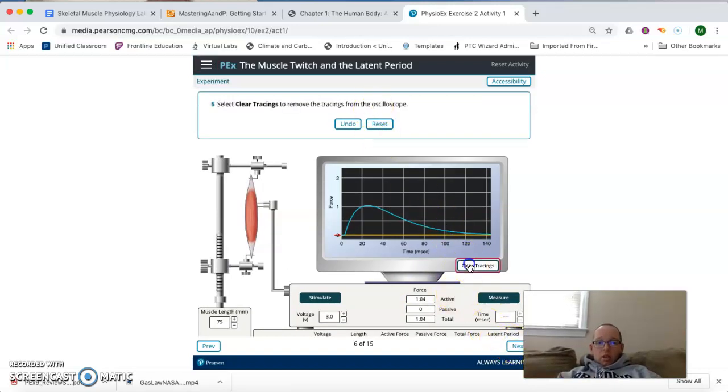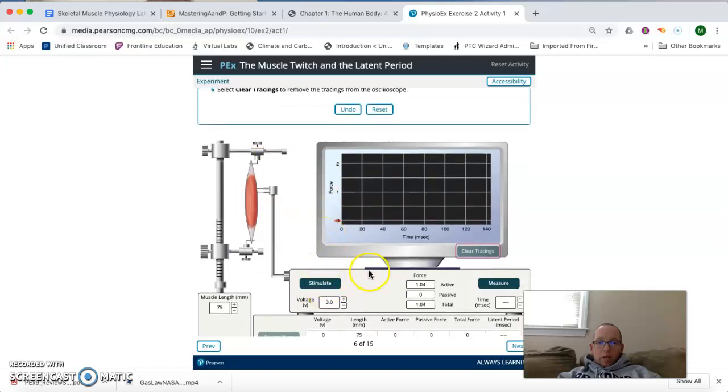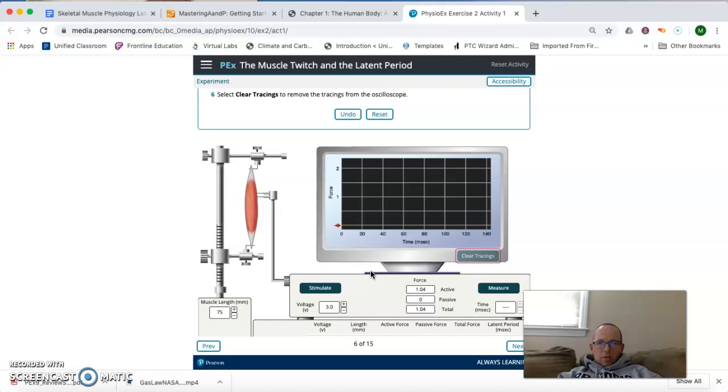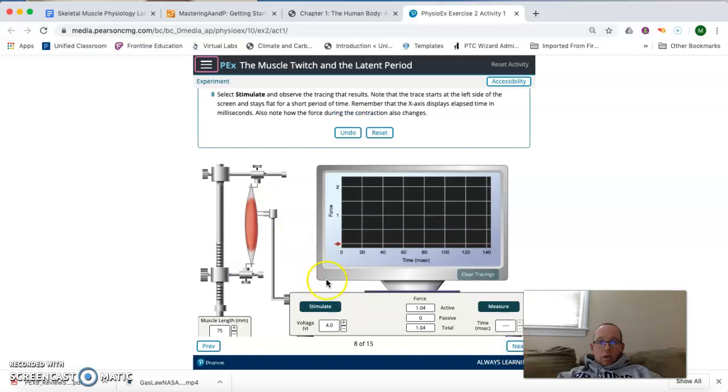So, now, we're going to clear the tracings so we can have a fresh palette to look at. So now, if we go to next, we're going to increase the voltage to 4. And we're going to go ahead and stimulate again. And this time, it's telling us to note that the trace starts at the left side of the screen and stays flat for a short period of time. You'll notice just to the left of the display, there's a tiny little interval where it remains flat. So, really look for that closely. You see that it doesn't start right on the edge there. There's a little interval here. Our goal here is to figure out how long that interval is.